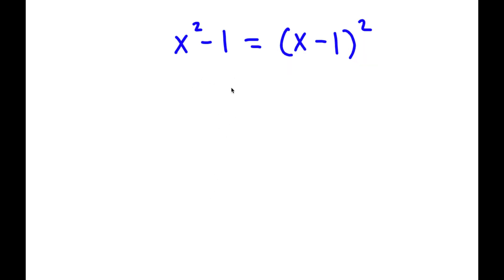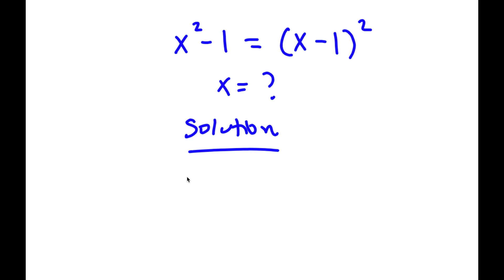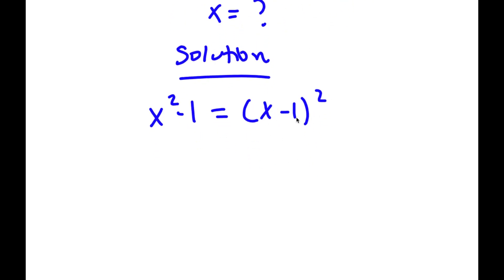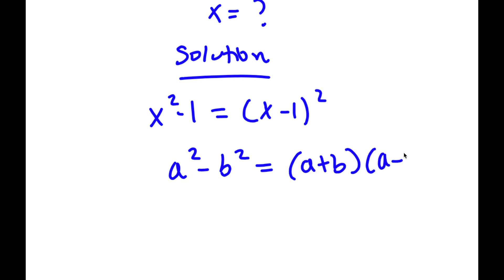All right, so in this problem, I have x squared minus 1 is equal to x minus 1 squared. I want to find the value of x. To start, I'm going to expand x squared minus 1. If I have something in the form a squared minus b squared, this is equal to a plus b times a minus b.